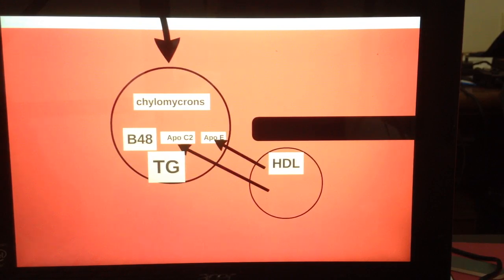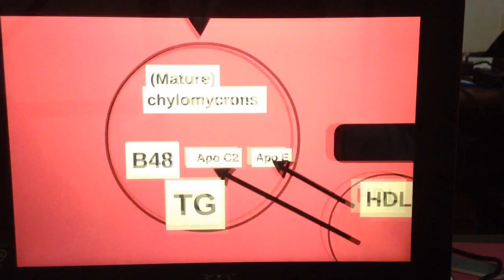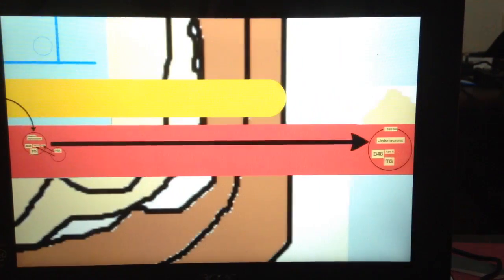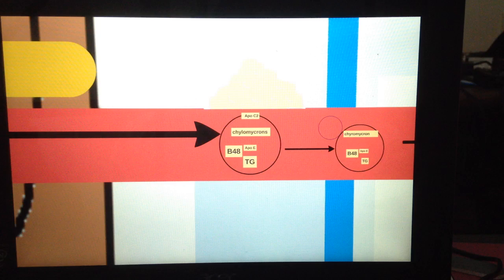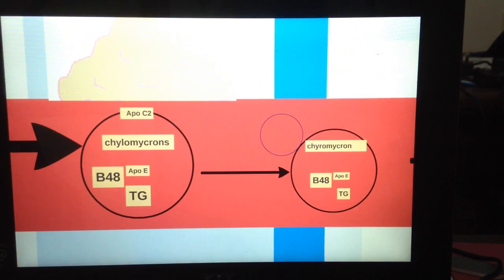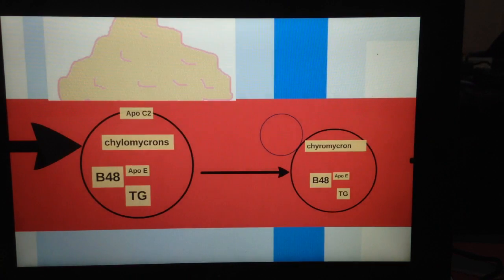And chylomicron, after having seen HDL, well, she has to do her own job. Anyway, after getting the ApoC2 and ApoE from HDL, it is finally known as the mature chylomicrons. It still has the B48, so still beautiful. After that, it goes to any locations that they can find.